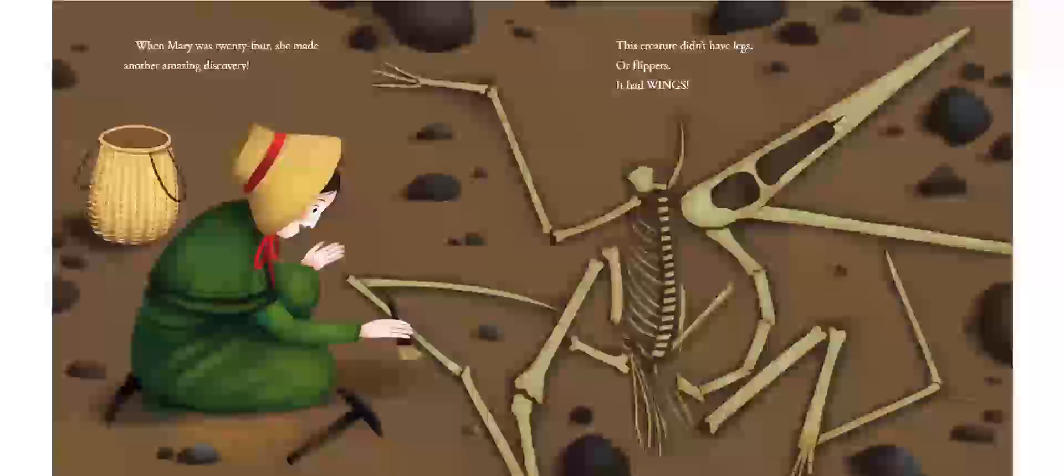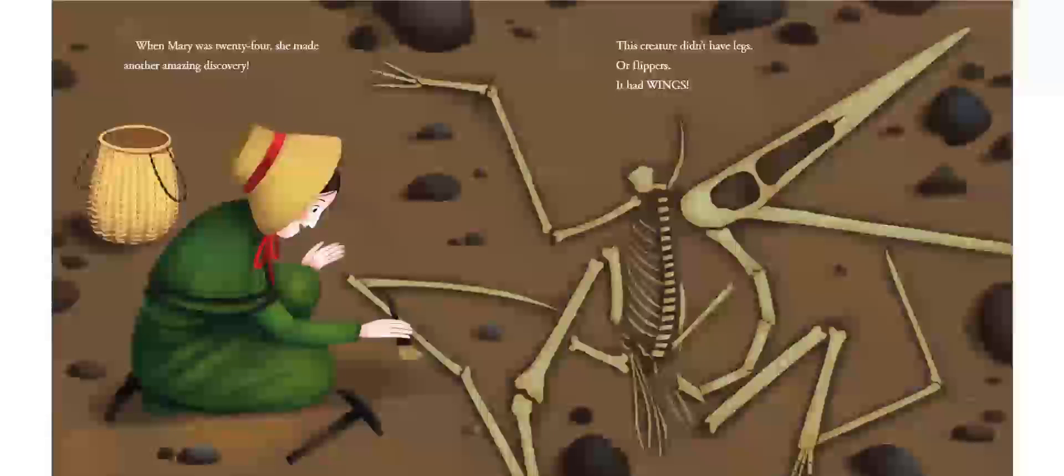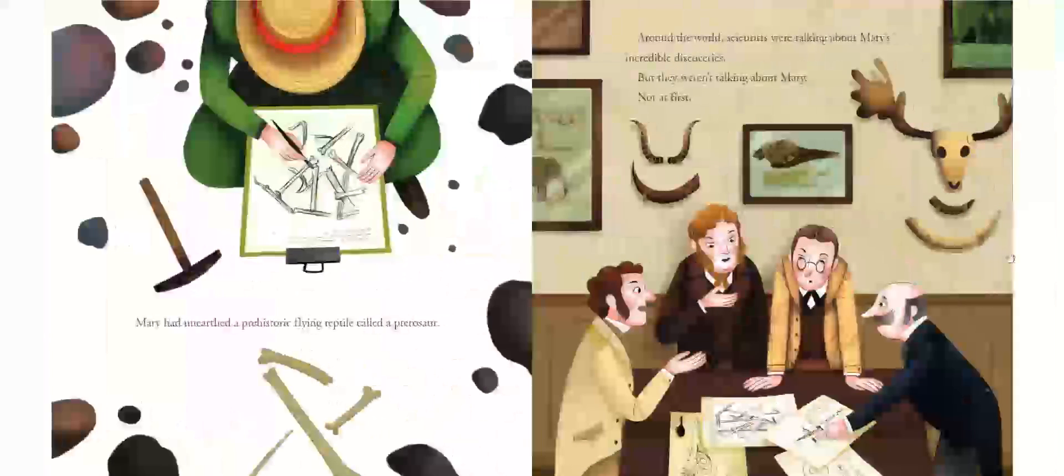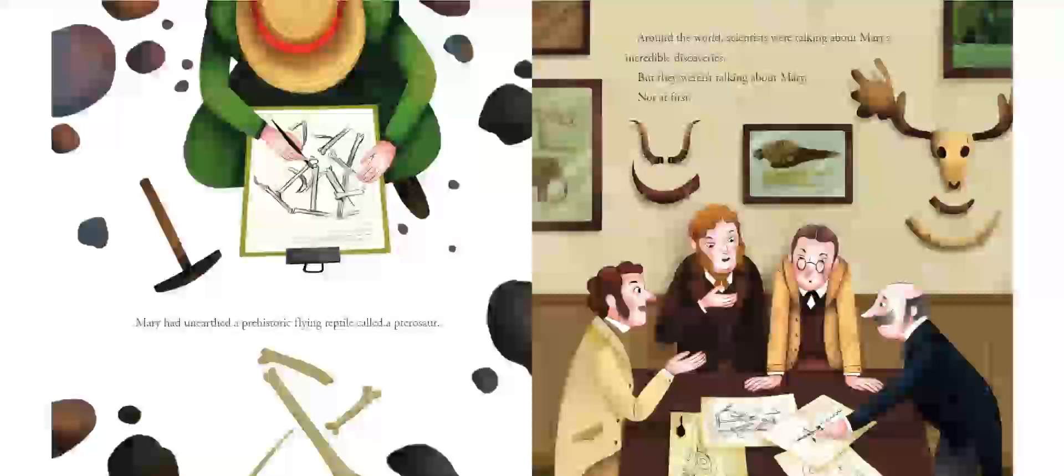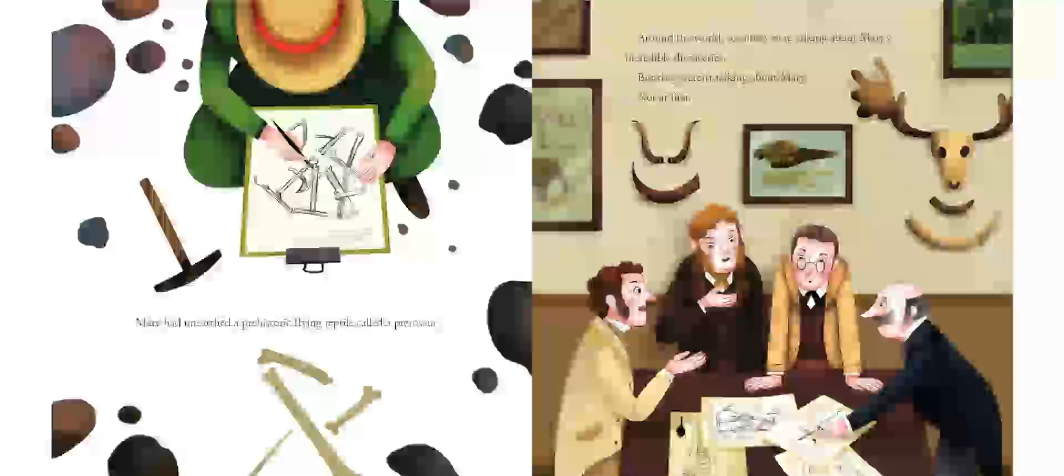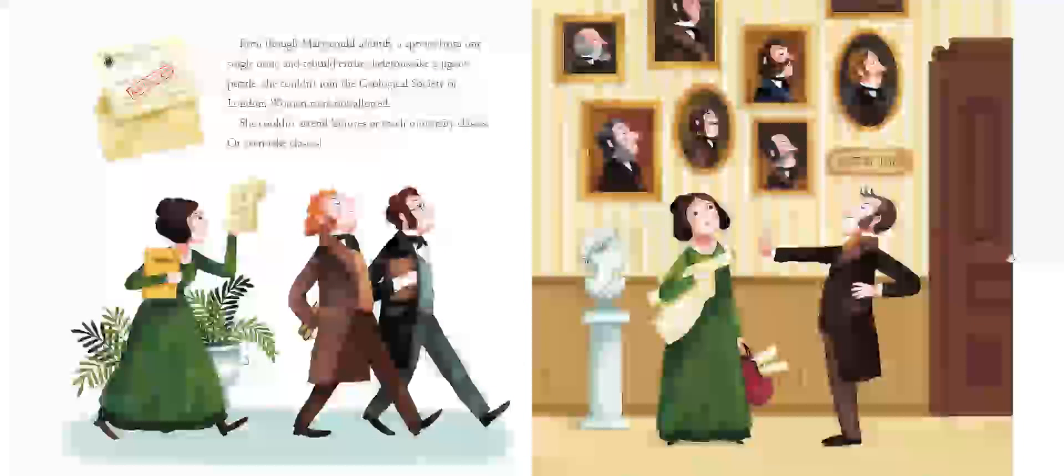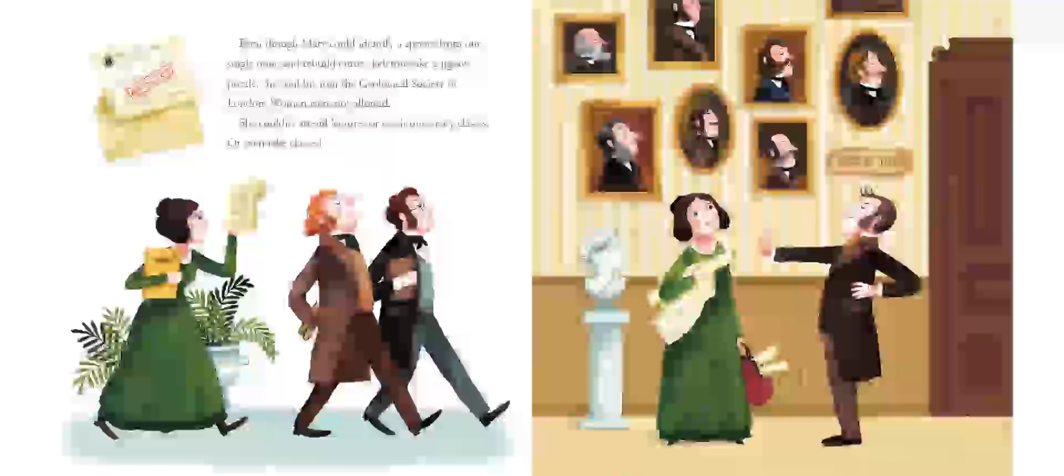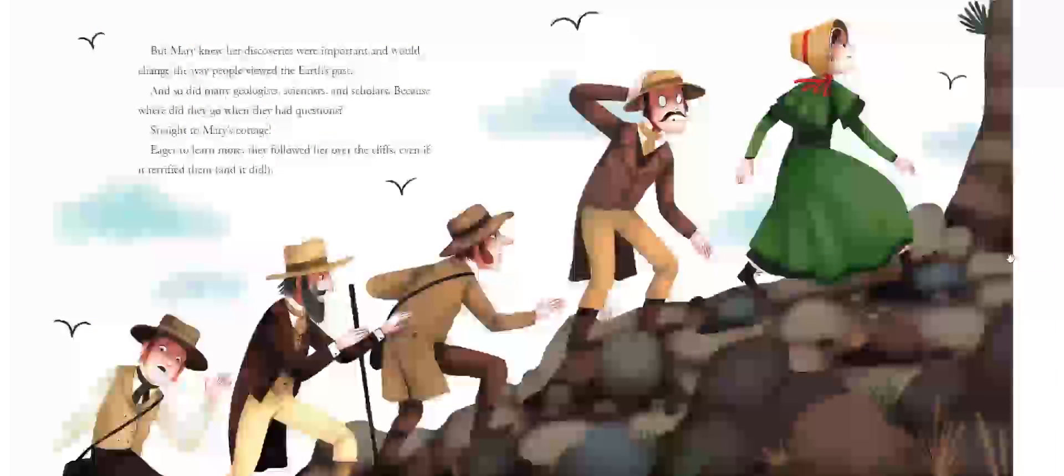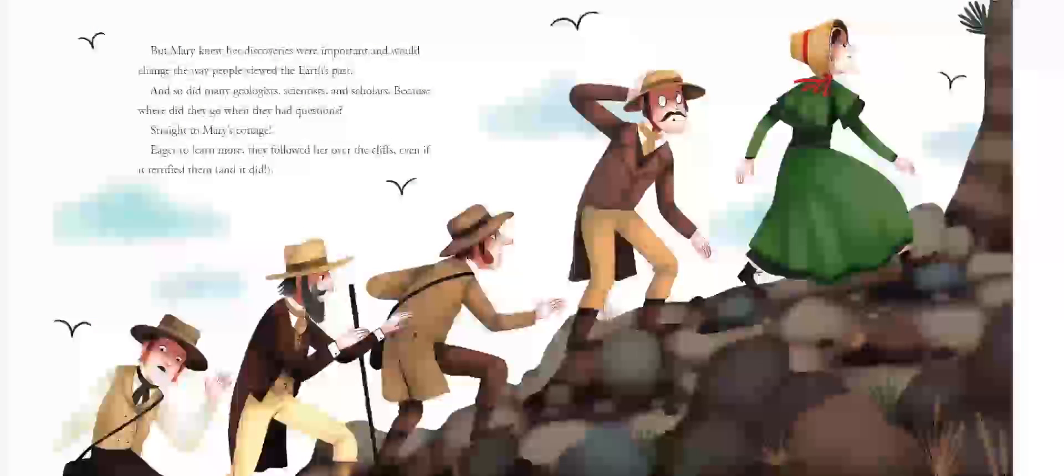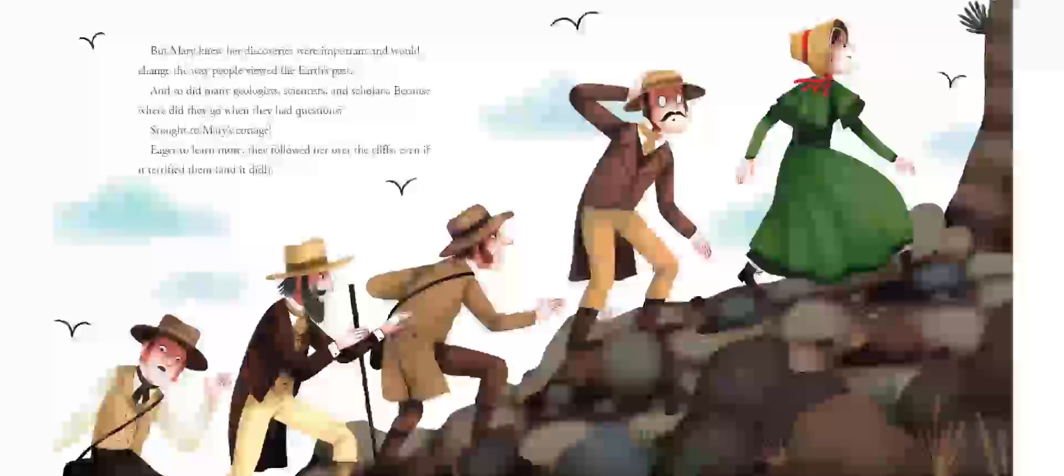When Mary was 24, she made another amazing discovery. This creature didn't have legs or flippers. It had wings. Mary had unearthed a prehistoric flying reptile called a pterosaur. Around the world, scientists were talking about Mary's incredible discoveries. But they weren't talking about Mary. Not at first. Even though Mary could identify a species from one single bone and rebuild entire skeletons like a jigsaw puzzle, she couldn't join the Geological Society of London. Women were not allowed. She couldn't attend lectures or teach university classes or even take classes.